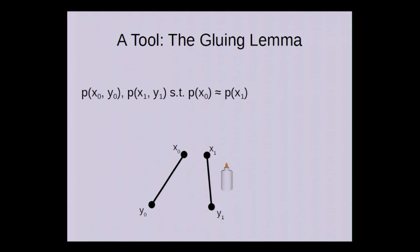As a tool we use the following technical lemma which states, and I'm not going to prove, that if we have two distributions x0, y0 and x1, y1 so that the marginal distributions x0 and x1 are close to each other, then we can glue them together into one big distribution so that x0, y1 is statistically close to x1, y1.